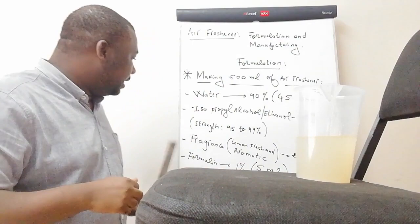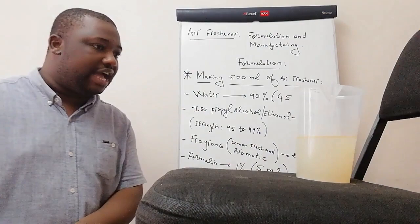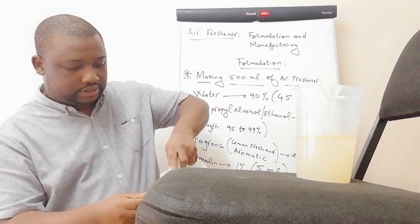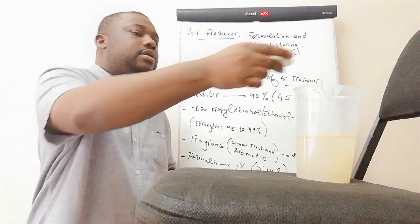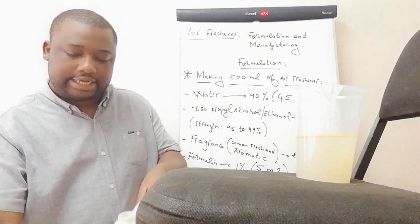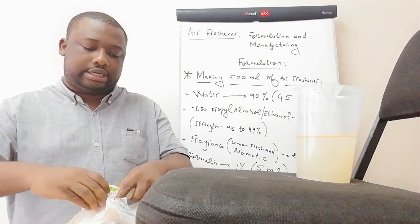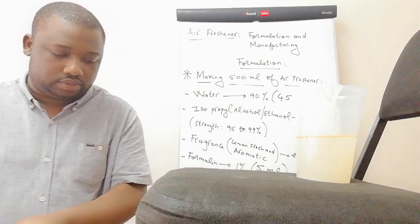The next ingredient is formalin — formalin should be five mils of the total volume. About five mils of formalin. I'll just close it as I told you — it gets evaporated, so I need to keep it sealed so I don't lose the formalin. Make sure that you mix very well.